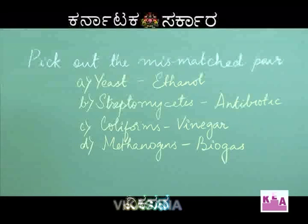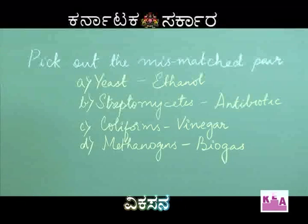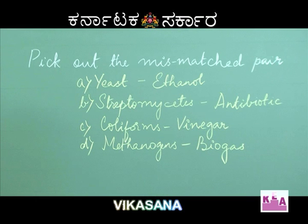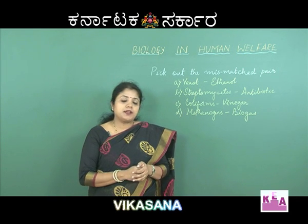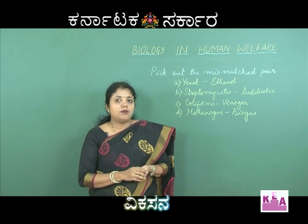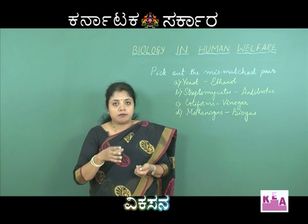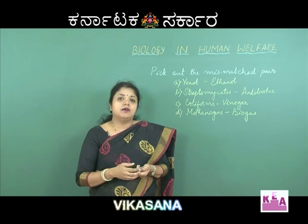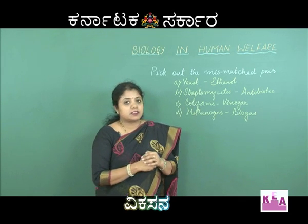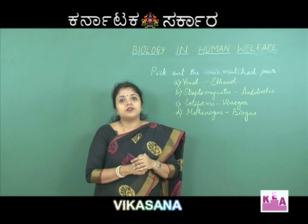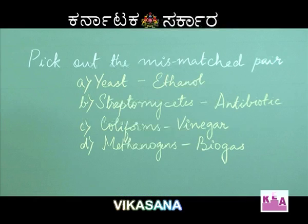The next question: pick out the mismatched pairs. Option A is yeast and ethanol, option B is Streptomycetes and antibiotic, option C is coliforms and vinegar, and option D is methanogens and biogas. You need to know the uses of certain microbes, studied in the chapter 'Microbes and Human Welfare.' Yeast or Saccharomyces is an organism used in fermentation to produce alcohol or ethanol — so yeast and ethanol is a correct pairing.